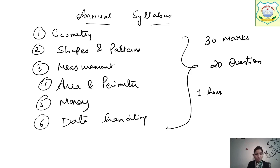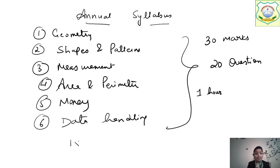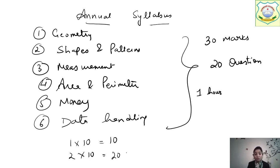Give the test properly. There will be 10 questions of 1 mark each, and 10 questions of 2 marks each, so that will be 20 marks from the 2-mark questions.